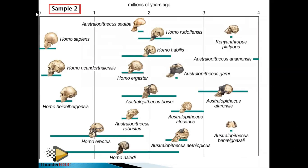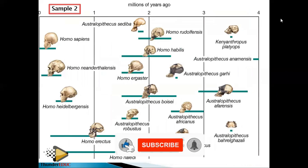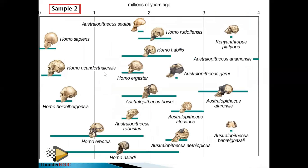In this next phylogenetic tree, zero is at the top and the scale goes downward: one, two, three, four million years ago. They can ask you how many genera are shown. Counting: Australopithecus is one, Homo is two, Kenyanthropus is three — so there are three genera. For species, you count all of them: sapiens, neanderthalensis, augustas, habilis, and so on — the second name identifies the species.